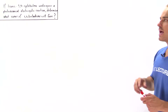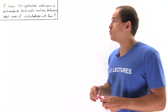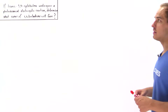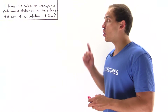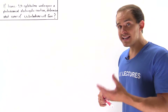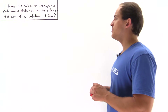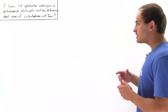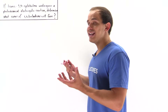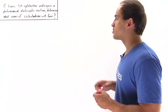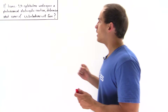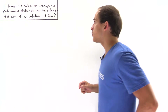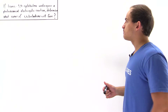So if trans-3,4-cyclobutene undergoes a photochemical electrocyclic reaction, determine what the isomer or isomers of 1,3-butadiene will form. The first step is to draw our initial starting material — we begin with trans-3,4-cyclobutene.